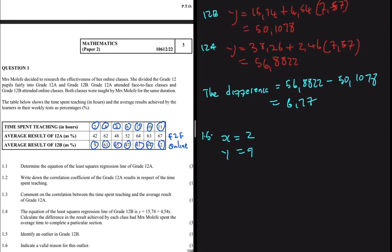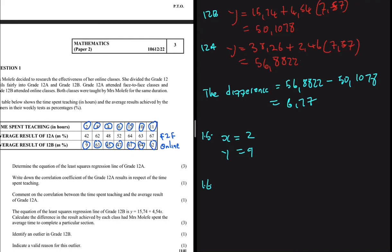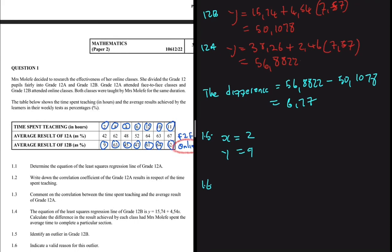Question 1.6 asks for a valid reason for this outlier. Remember that grade 12B was being taught online. A valid reason could be that the learner was not paying attention — for example, opening the Zoom link but doing something else — or perhaps the learner wanted to attend but experienced connectivity issues. Many problems can arise in an online learning environment.